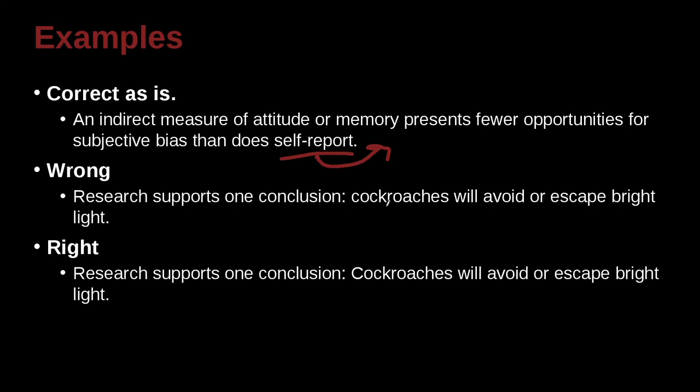Research supports one conclusion. We have a colon here. Cockroaches will avoid or escape bright light. So we need to very simply say, oh look, here's a colon. So it looks like something's going on here. Do we have an independent and do we have an independent on both sides? Research supports one conclusion. We have a subject. We have a verb. That looks like it could be a sentence. Cockroaches will avoid or escape bright light. So yeah, that's really clear too. So we have two sentences there. We've put two sentences together. What can we do?